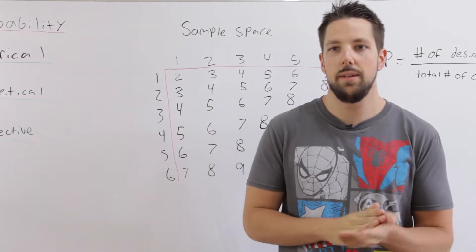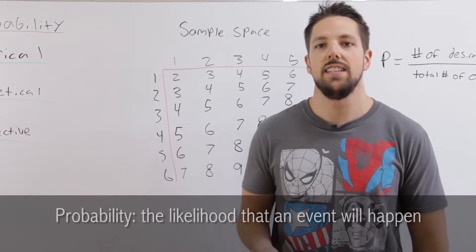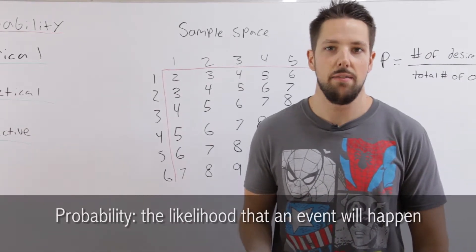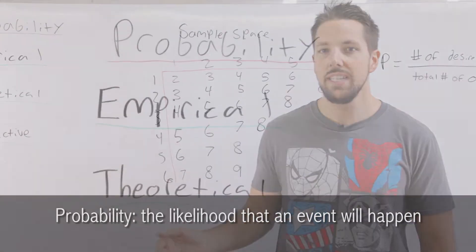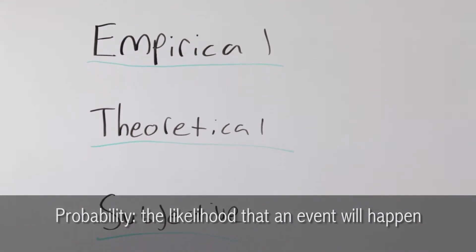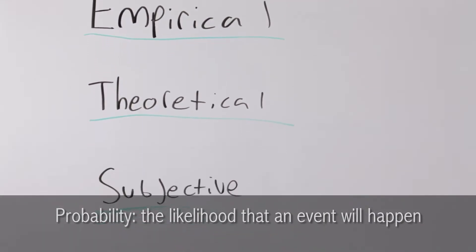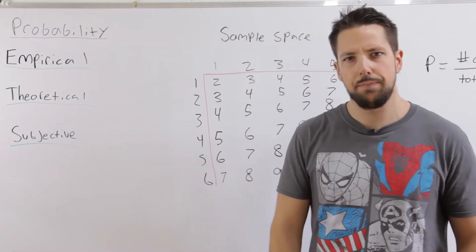So we're going to do some probability. Probability is the likelihood that an event will happen. There are three types of probability: empirical probability, theoretical, and subjective.